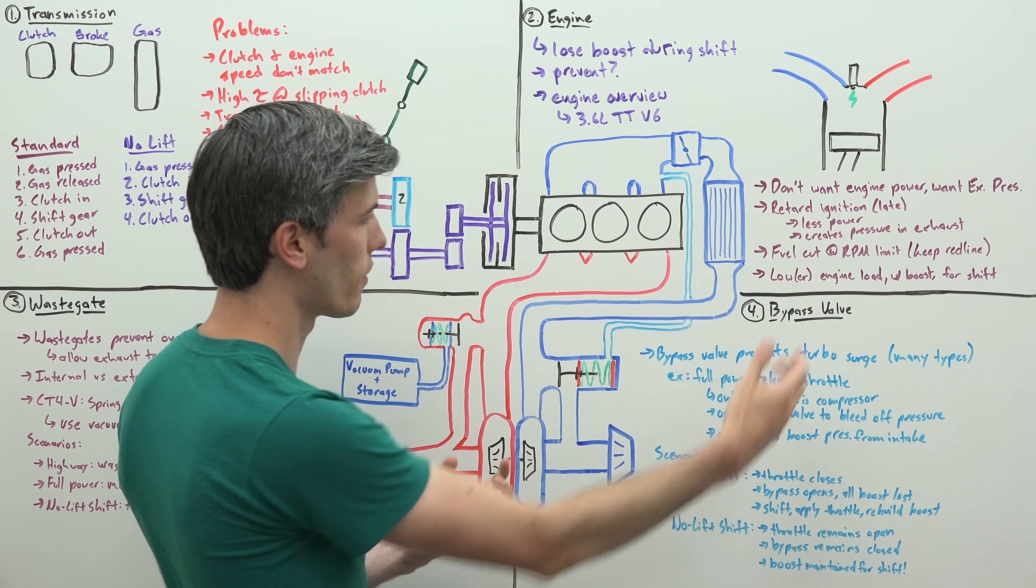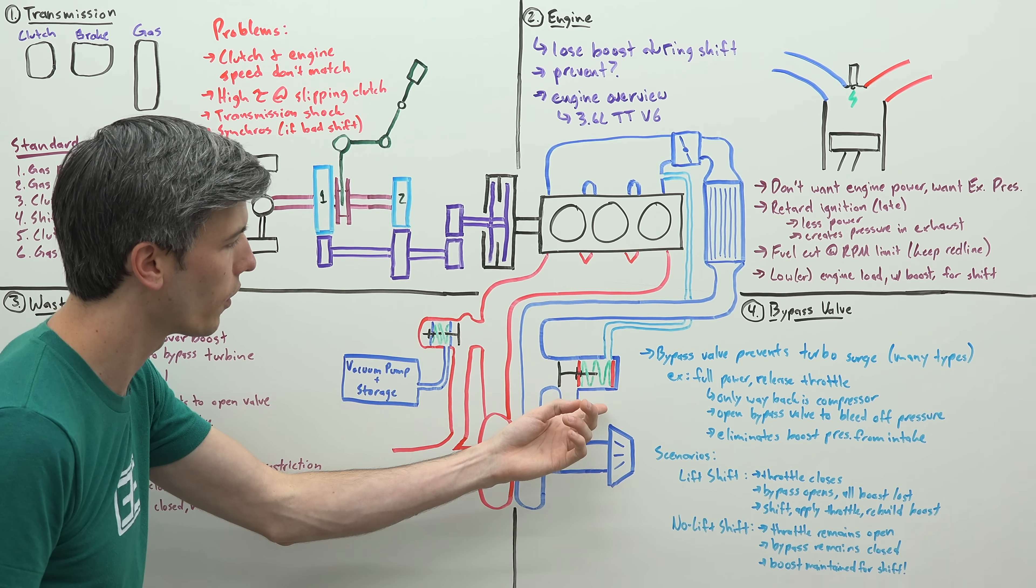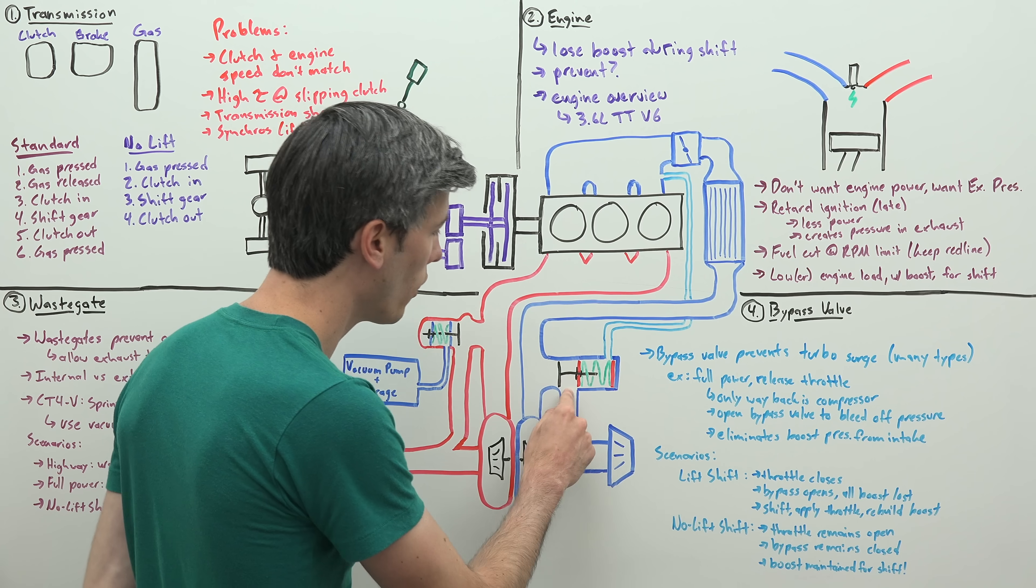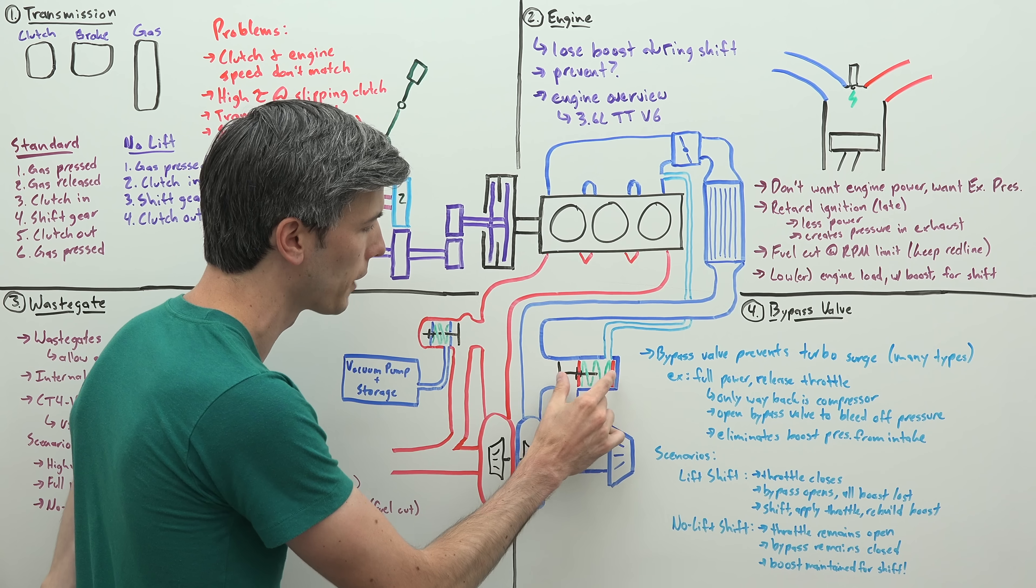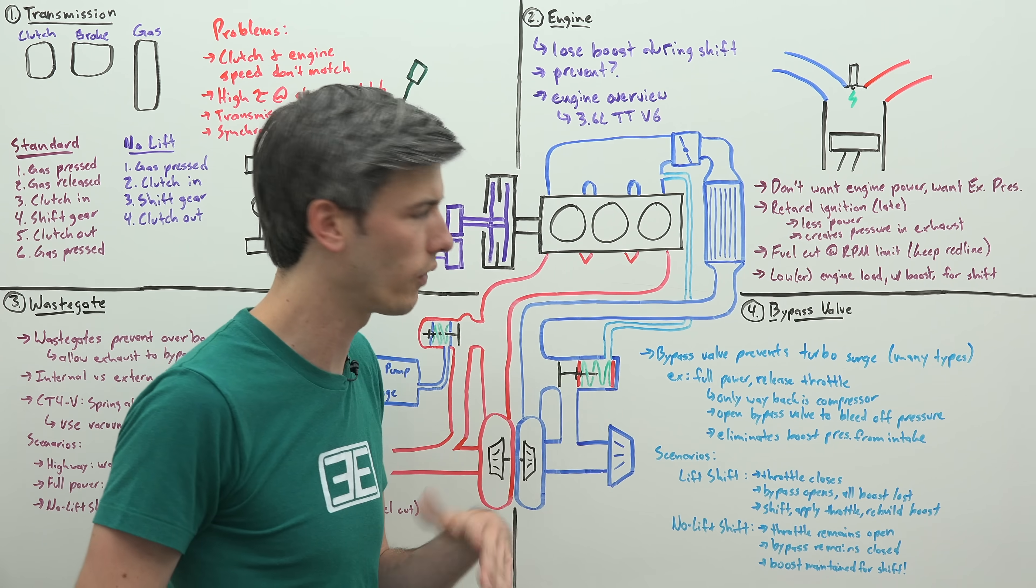Finally, we get to bypass valves. So you can kind of think of a bypass valve like a wastegate, except it is on the intake side instead of on the exhaust side. So you have a valve that wants to be pushed closed by this spring, and then by regulating the pressure within this spring, you can open or close that valve.